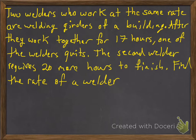we have two welders who work at the same rate, welding girders of a building. After they work together for 17 hours, one of the welders quits. The second welder requires 20 more hours to finish. They would like us to find the rate of the welder, or they may ask us to find the time required for one welder to do the job.